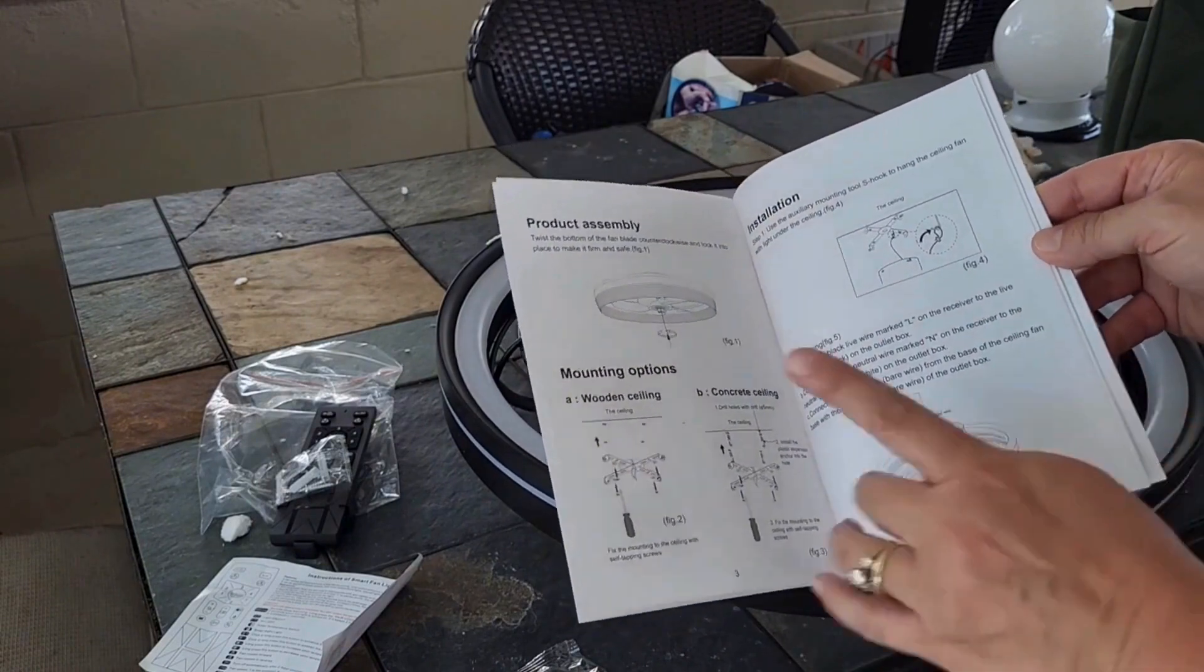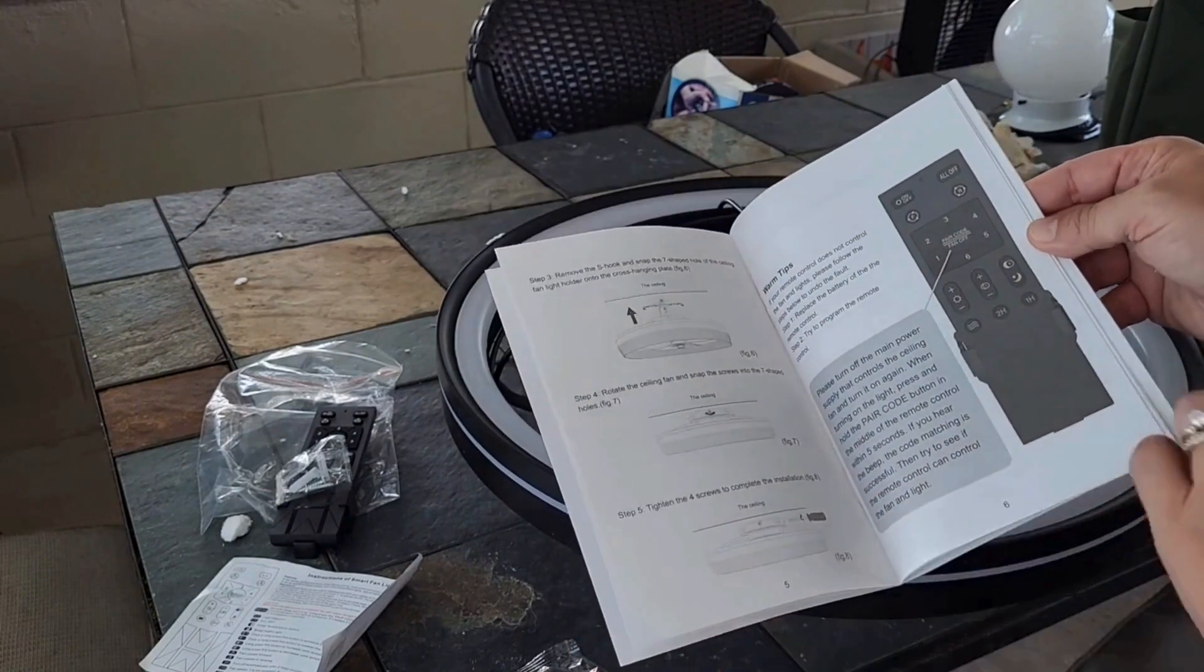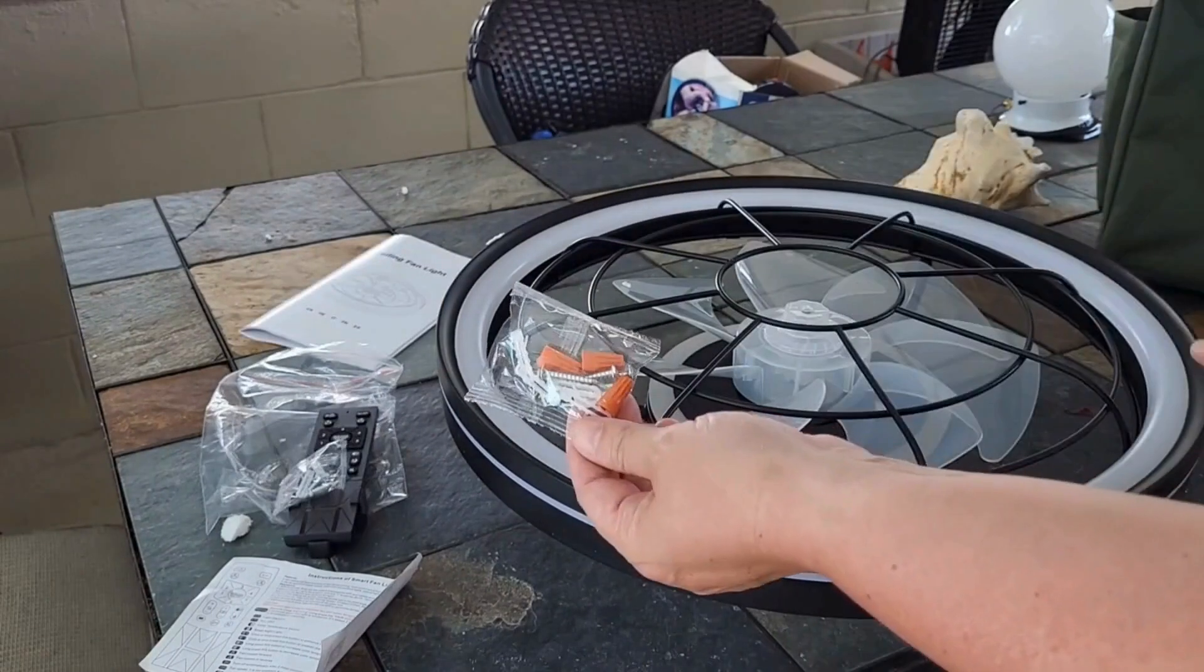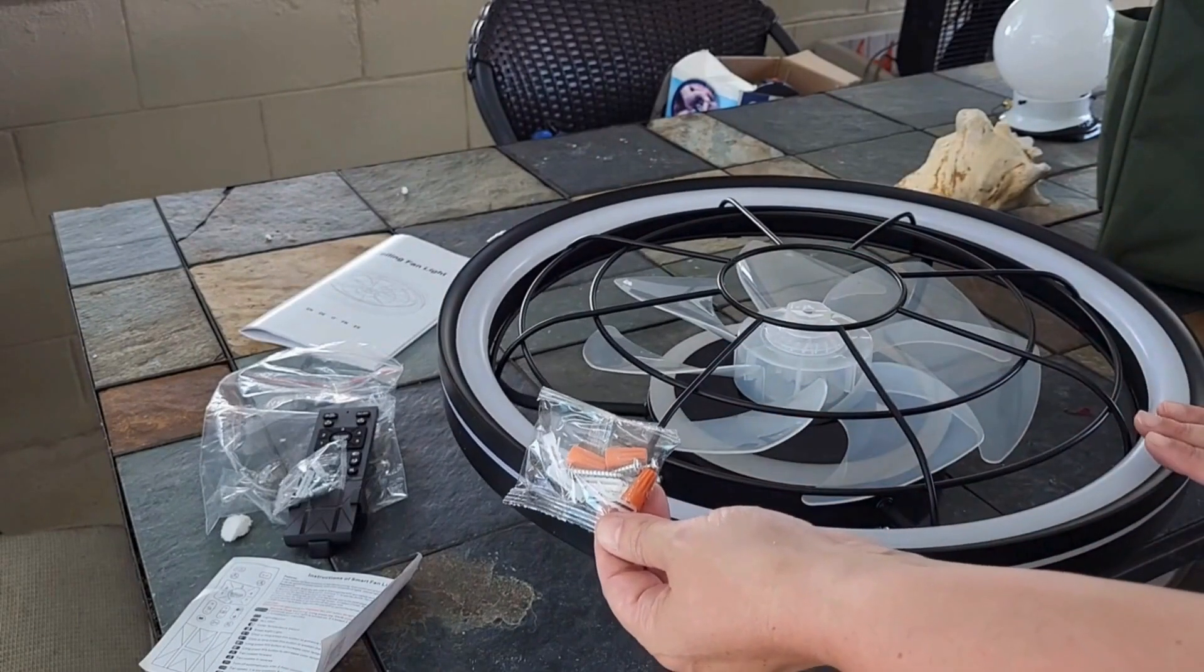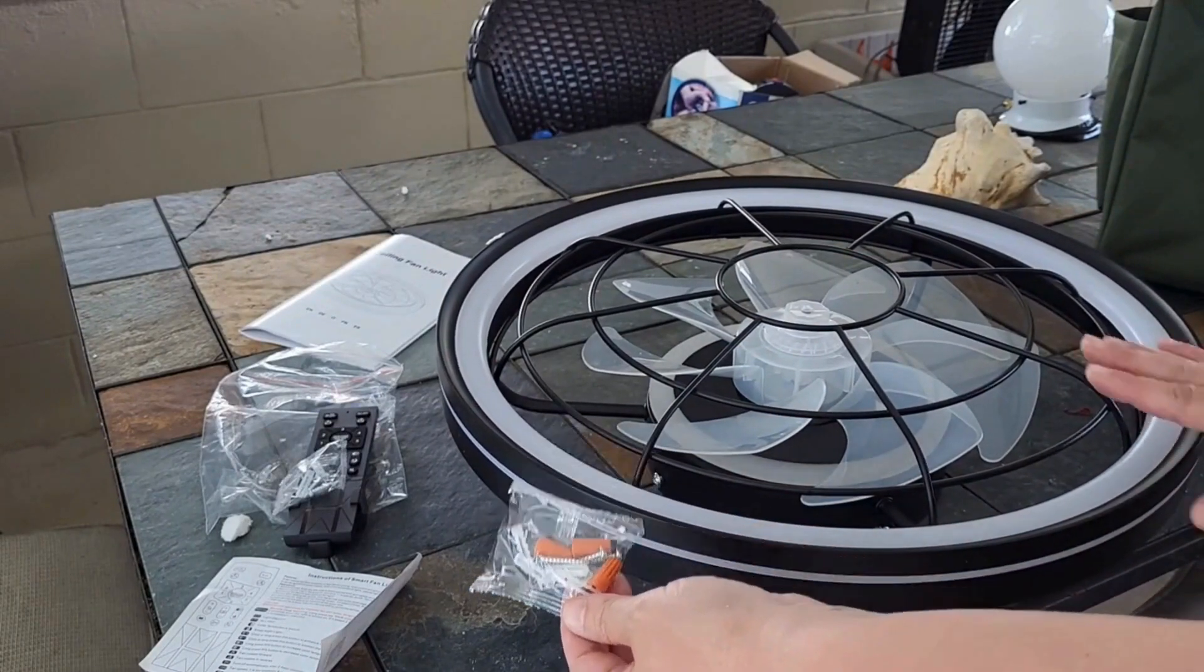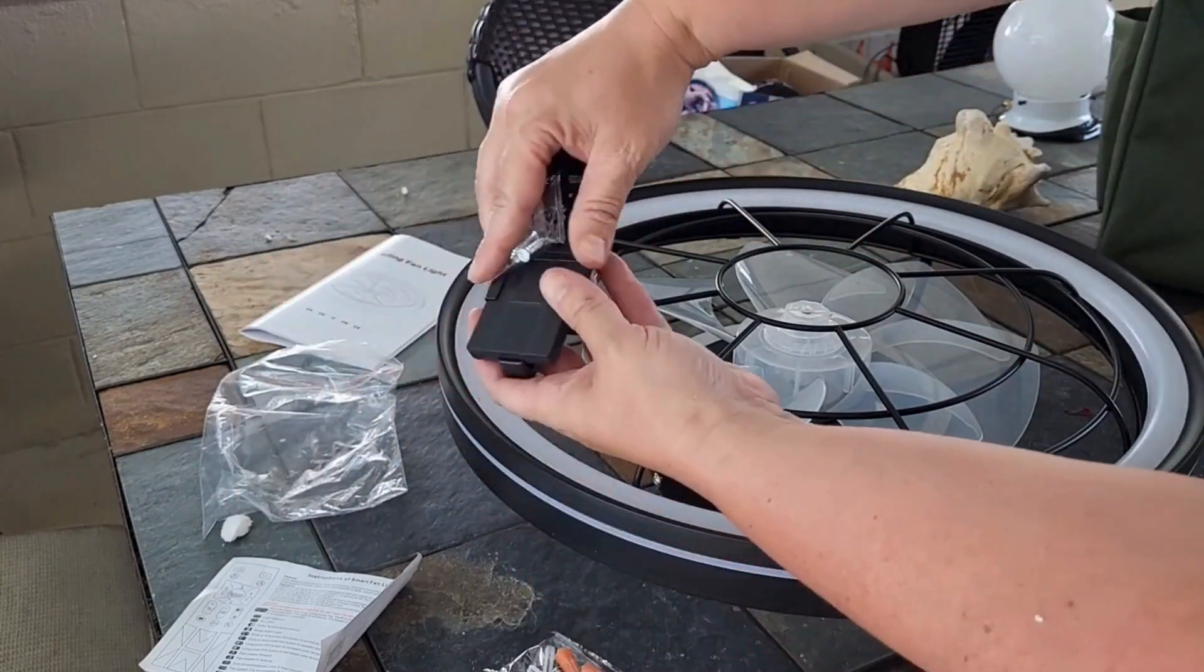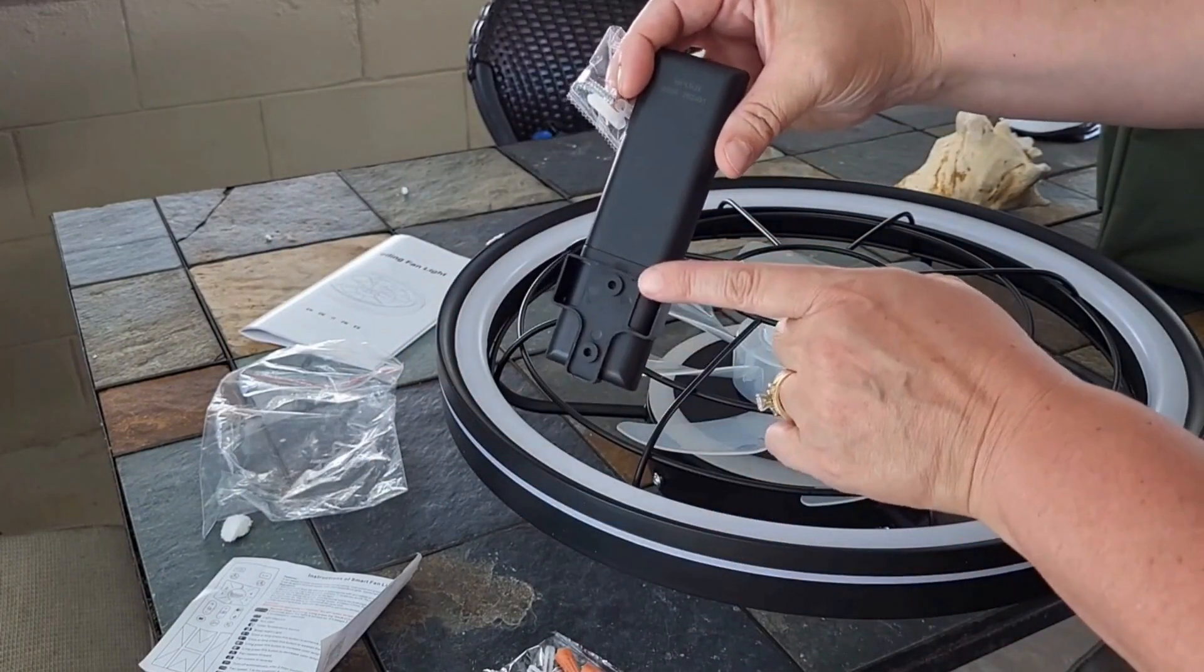And if you look, it looks like it's going to be such an easy installation. It does come with the hardware in order to put the ceiling fan on the ceiling. It also comes with the hardware to put the remote on the wall.